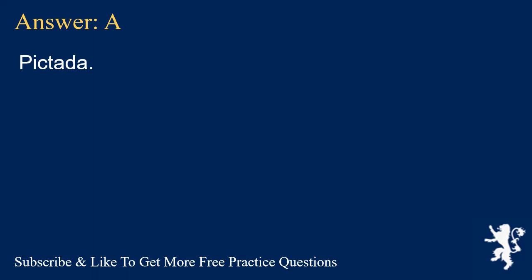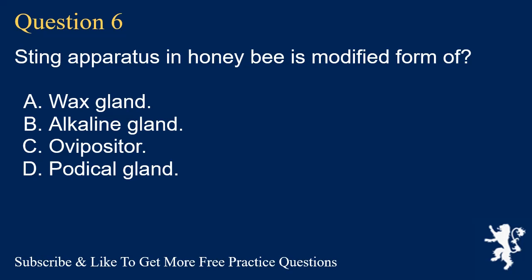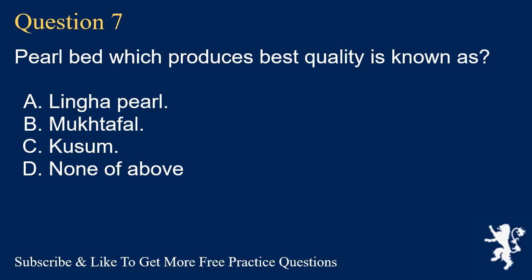Question 6. Sting apparatus in honey bee is a modified form of? A. Wax gland. B. Alkaline gland. C. Ovipositor. D. Potical gland. Answer: C. Ovipositor.